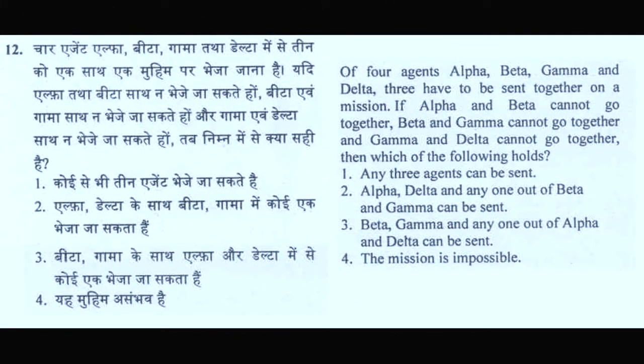Here is the next problem — problem number 12. Of 4 agents alpha, beta, gamma and delta, 3 have to be sent together on a mission. The constraints are: alpha and beta cannot go together, beta and gamma cannot go together, and gamma and delta cannot go together. The options are: option 1 — any 3 agents can be sent; option 2 — alpha, delta and anyone out of beta and gamma can be sent; option 3 — beta, gamma and anyone out of alpha and delta can be sent; option 4 — the mission is impossible.